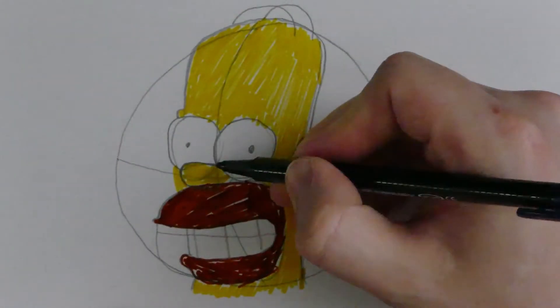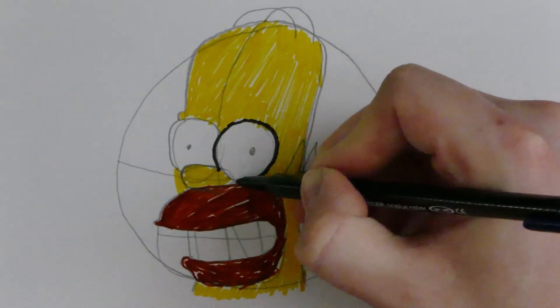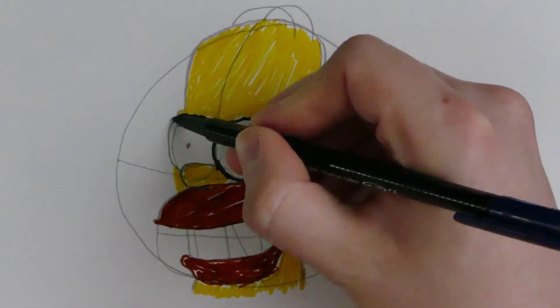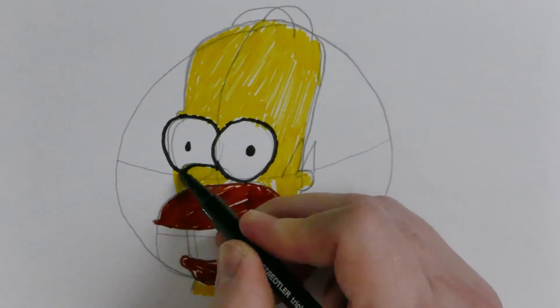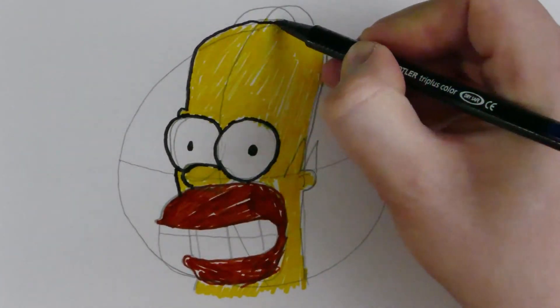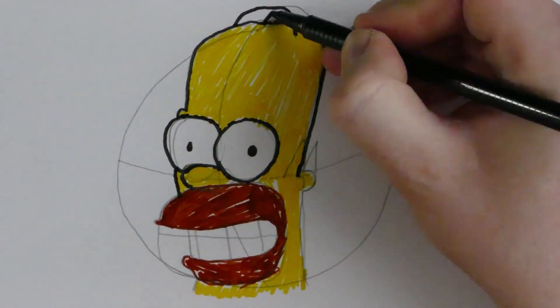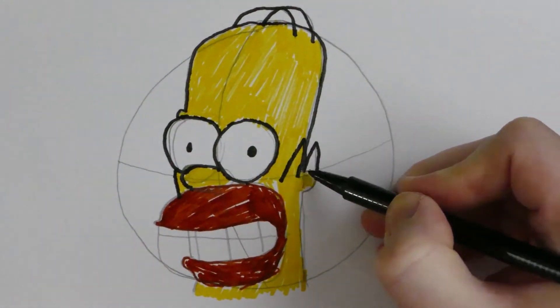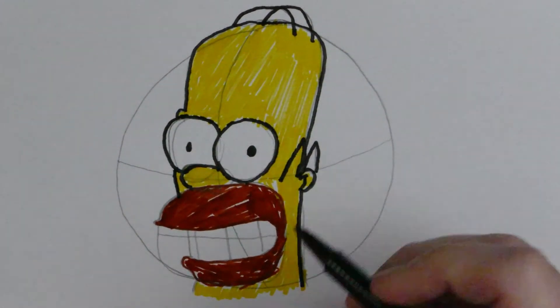Now, we're going around with the black to give Homer even more definition and make our monstrosity even more apparent. I try to rectify my mistake with his eye and just fail. I try to sort out his hairline and his head, but again, I just make it worse.